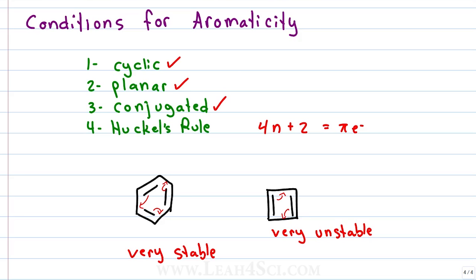How do you figure this out out of a laboratory setting? This is where we have to solve for 4n plus 2 equals pi electrons.